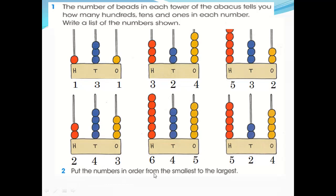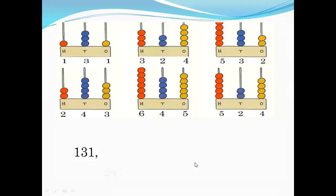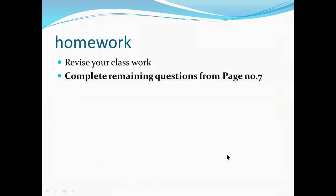Now put the numbers in order from the smallest to the largest. The smallest number, I need to see which is the smallest number in hundreds. 1, 3, 5, 2, 6, 5. 1 is smallest, 131, then 243, the second smallest number, then 324, then 524 and 532, and 645. You just write like this: 131, 243, 324, 524, 532, and 645, from smallest to the largest number. Now you have another question on your book, so the remaining part you need to finish at your home. Boys, take care, complete remaining question from page number seven. Salam alaikum.